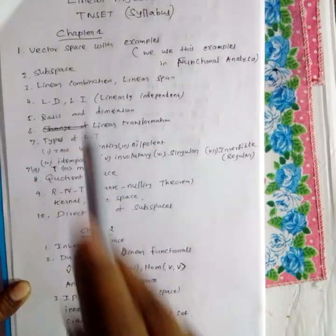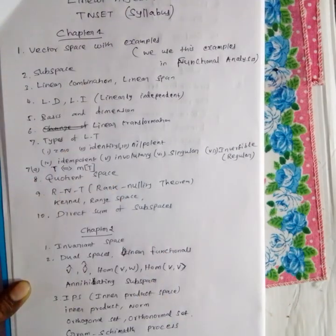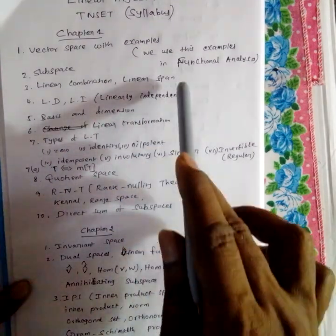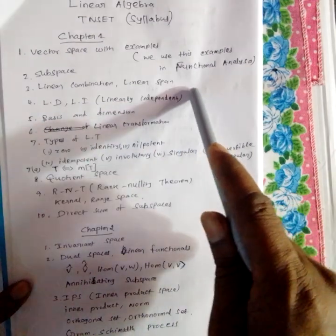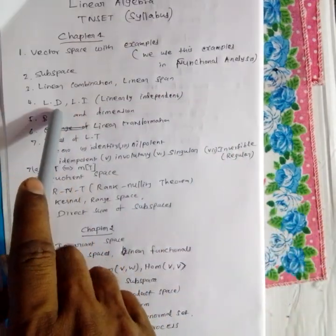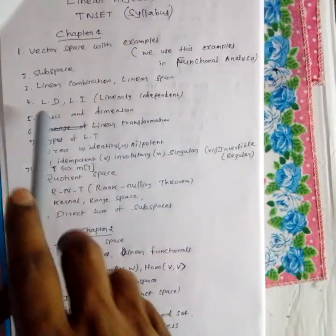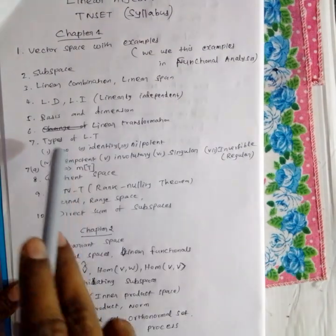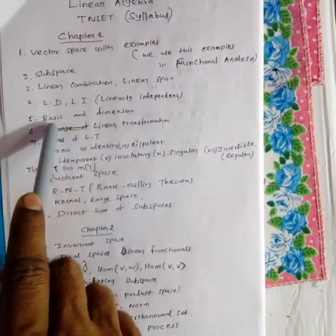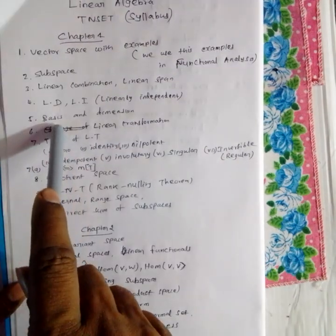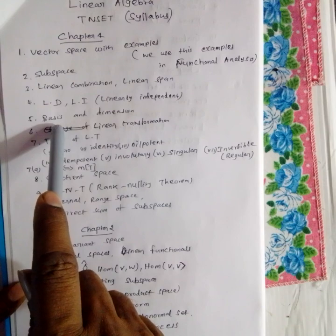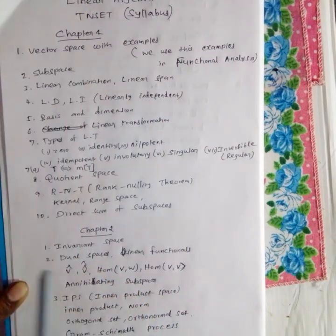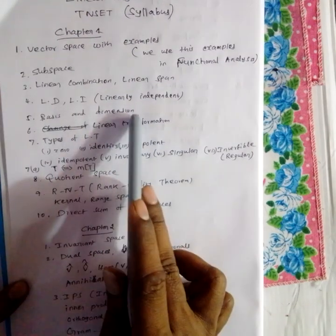Linear combinations. Linear span. Linear independence over the field. What is the basis? Maximum linearly independent set. Minimum spanning set. Dimensions.